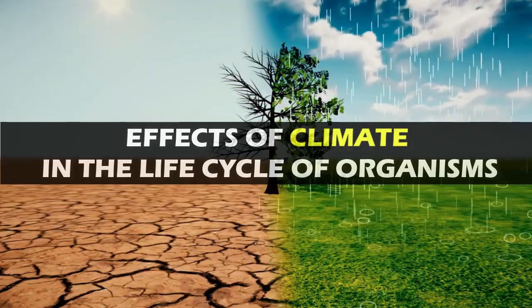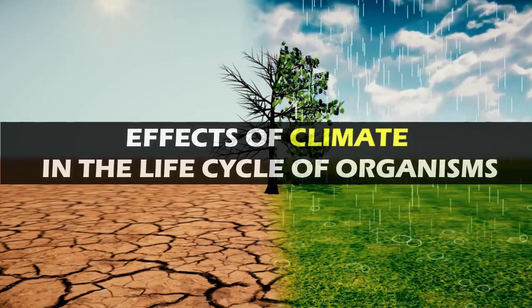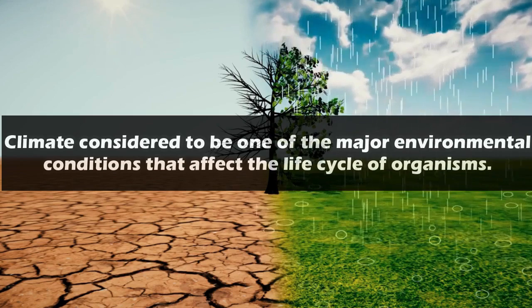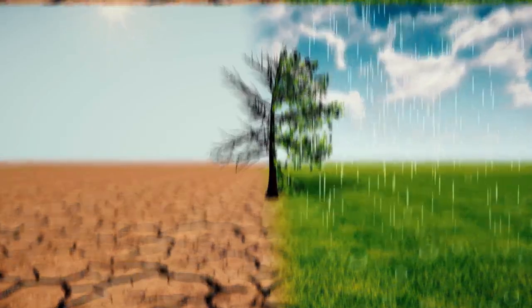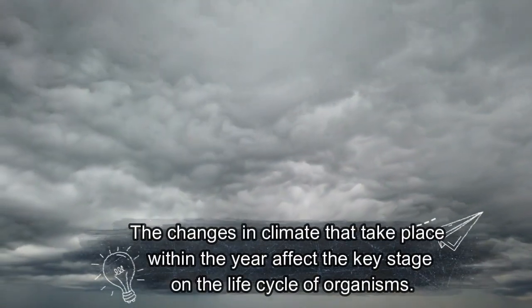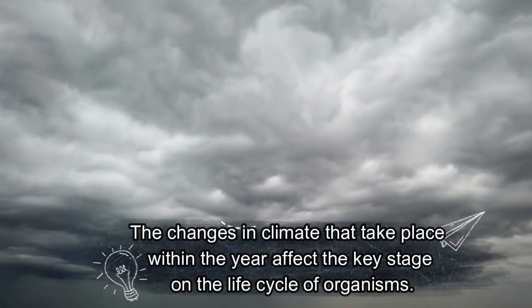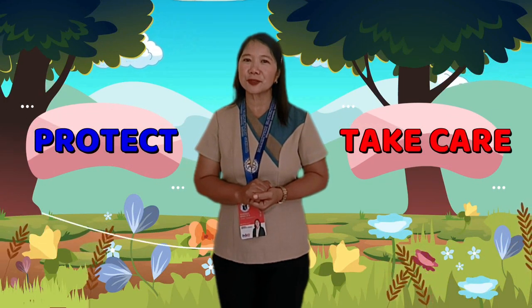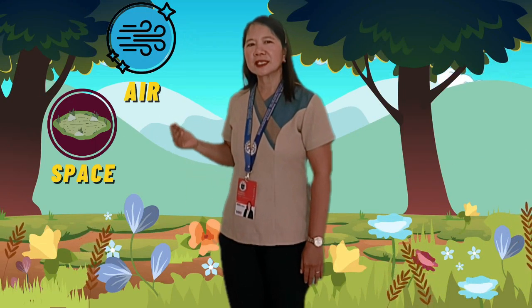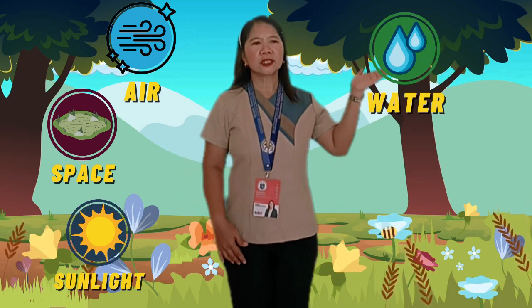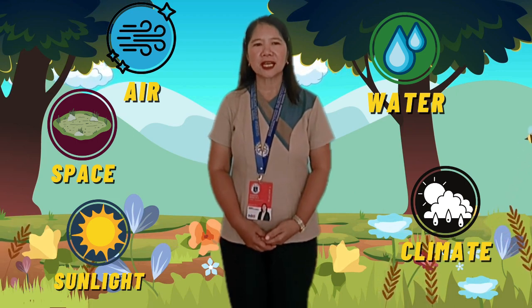The third and last factor that affects the cycle of organisms is the climate. Climate is considered to be one of the major environmental conditions that affect the life cycle of organisms. The changes in climate that take place within the year affect the key stages on the life cycle of organisms. So, it is very important for us to take care and protect our environment for the organisms to continue their life cycle. Hence, abiotic factors like air, space, sunlight, water, and climate bring effect in the life cycle of organisms.